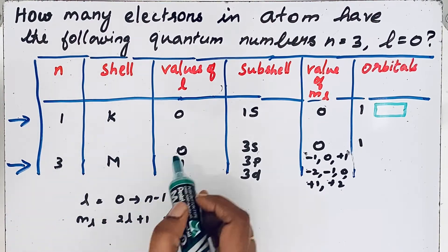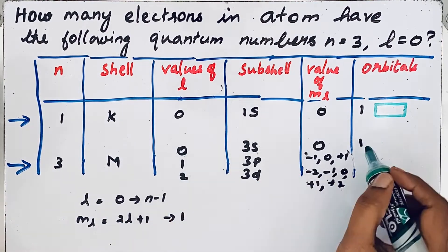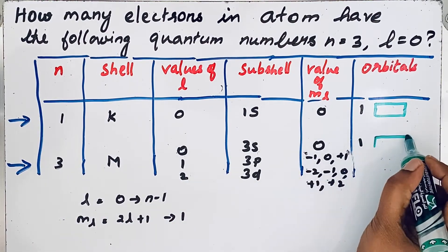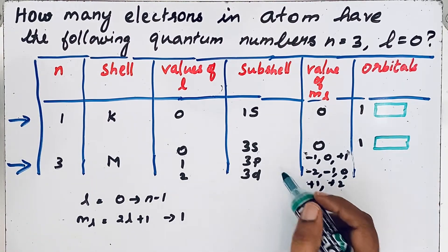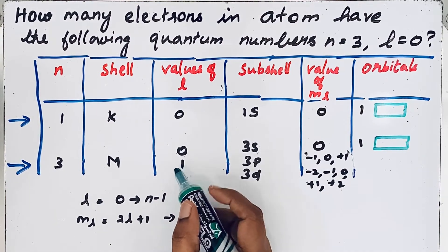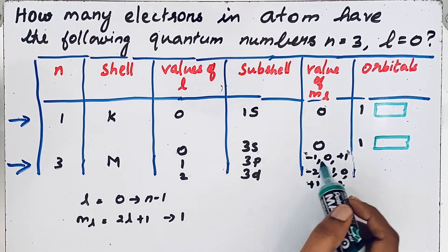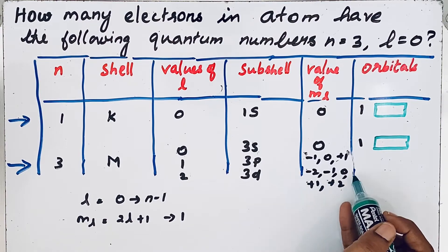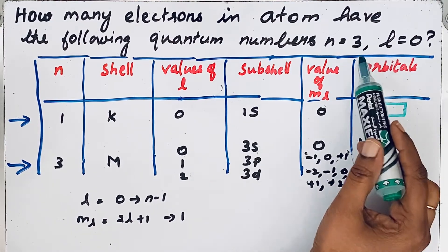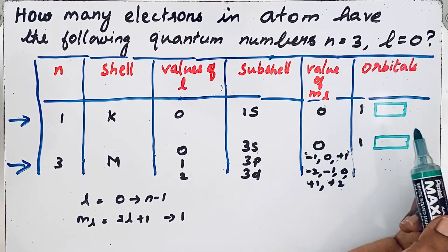N equals 3 and l equals 0, only one orbital. Let us show by the box diagram. For l equals 1 and n equals 3, we should draw 3 boxes, and for this one we have to draw 5 boxes. But let us concentrate only on that question: n equals 3 and l equals 0.